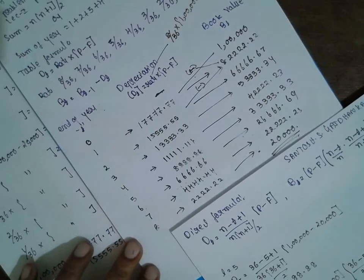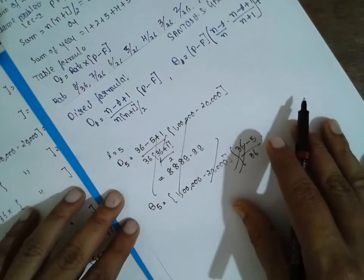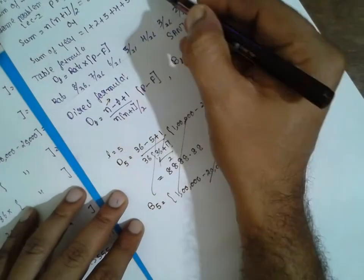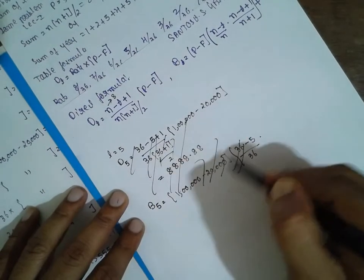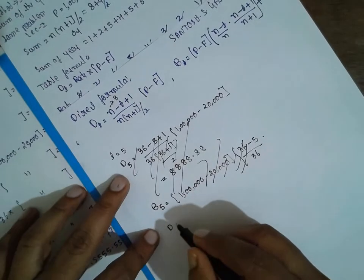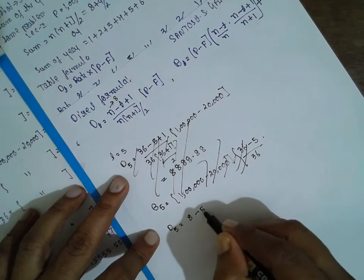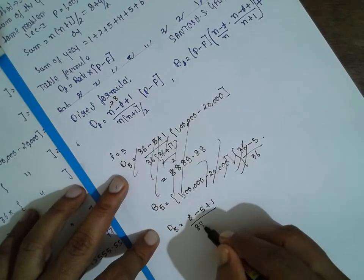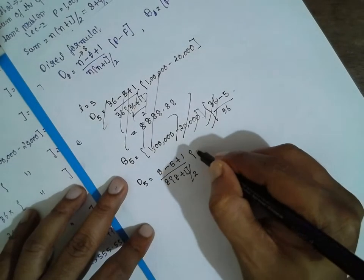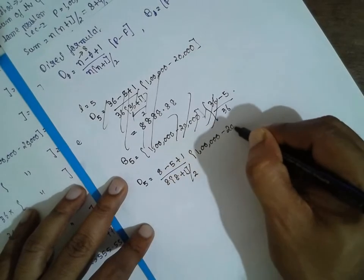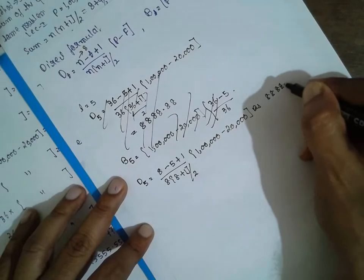Correcting the mistake: n is the life of the asset, which is 8, not 36. So for t = 5: d5 = [(8 − 5 + 1) / (8 × 9 / 2)] × (1,00,000 − 20,000) = [4/36] × 80,000 = 8,888.88. This matches the table value for year 5.